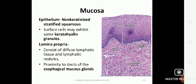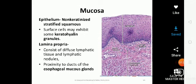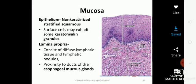The deep layer of the mucosa, the muscularis mucosae, is composed of longitudinally organized smooth muscle that begins near the level of the cricoid cartilage. It is unusually thick in the proximal portion of the esophagus and presumably functions as an aid in swallowing.